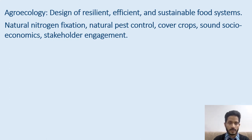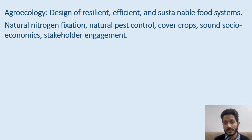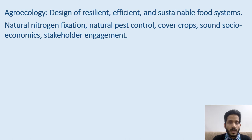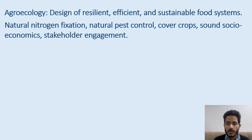This is where the role of agroecology comes in. Agroecology aims at designing resilient, efficient, and sustainable food systems based on the study of the ecology of agricultural systems. It doesn't consider agriculture simply as a production system where you give inputs and get outputs; it considers farming as a complete system with relationships and linkages to the water system, soil health, the environment, and the social system. In this context, agroecology can mean natural nitrogen fixation, natural pest control, weed control through cover crops, and balancing the socio-economic system by engaging the main stakeholders — the farmers.